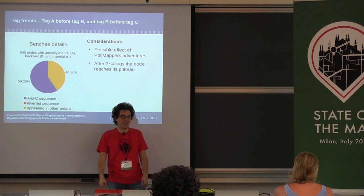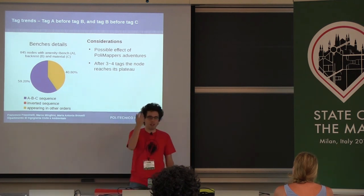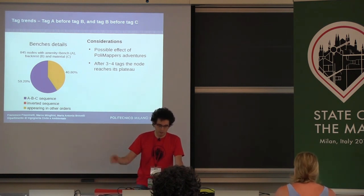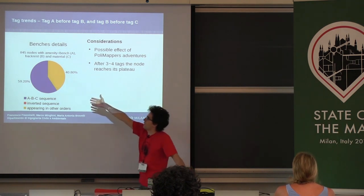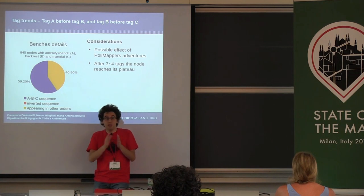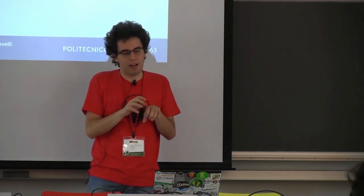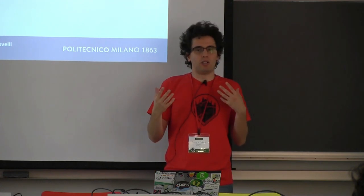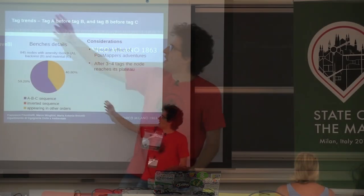We can say that B is a natural evolution of A — that's the main idea. Let's play with three different tags: A before B, and B before C in different versions. For benches: 845 nodes with amenity bench — that's A, backrest is B, and material is C. In Milan, in almost 60% of cases we have this exact evolution in different versions — people map the bench first, then add backrest, then at the very end add the material. While in 40% of the time we have different orders — maybe at the same time, or amenity bench with backrest and material in the same version.